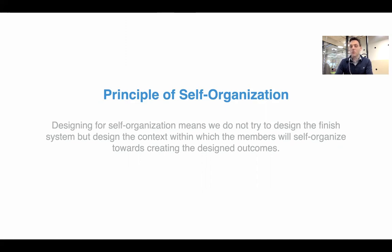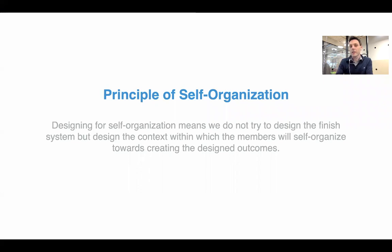This is a core principle: we shouldn't try to impose order on a complex adaptive system. We should work with context so as to get self-organization. Designing for self-organization means we do not try to design the finished system, but design the context within which the members have all self-organized towards creating the desired outcomes.